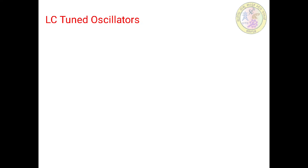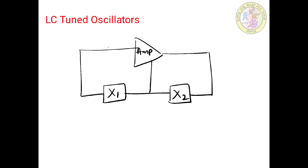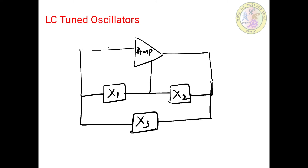Welcome to the next session on oscillators. In this session, we are going to discuss LC tuned circuits. The basic configuration of a LC tuned circuit consists of an amplifier circuit with reactive elements connected in a particular pattern. Here x1, x2, and x3 form the reactance elements — this is the basic configuration.